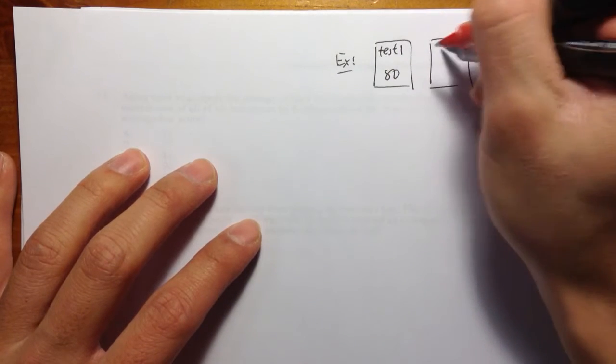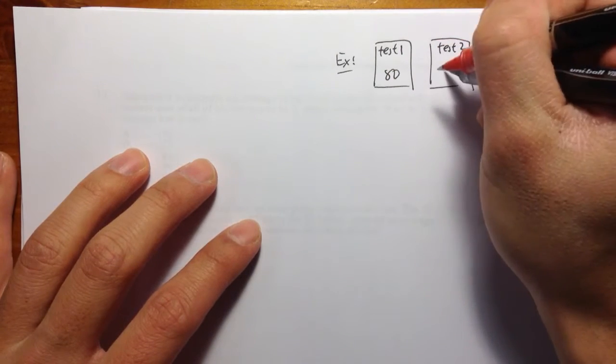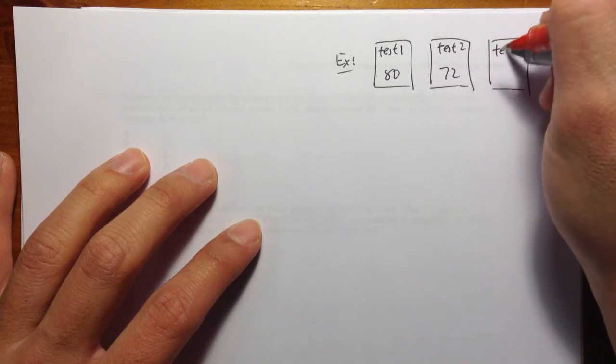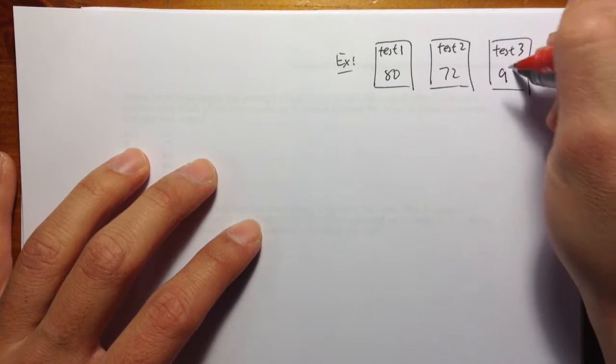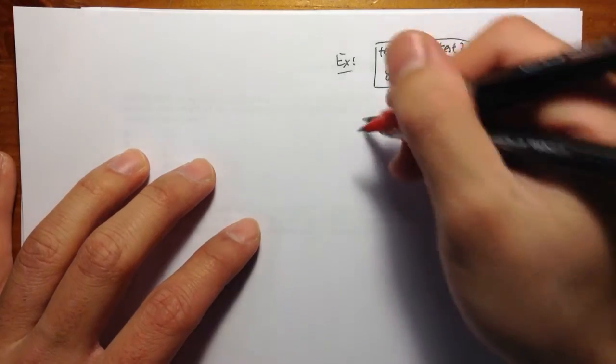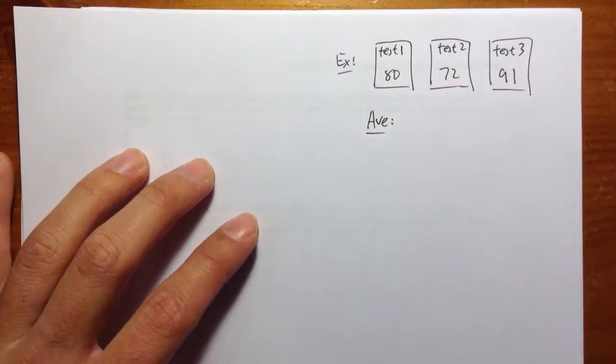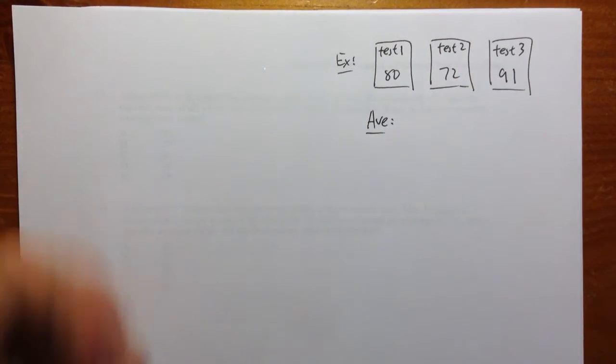Test two, he got 72 points. And test number three, he got 91 points. And the question is, we would like to know how to find the average of these three test scores. And how do we find averages?